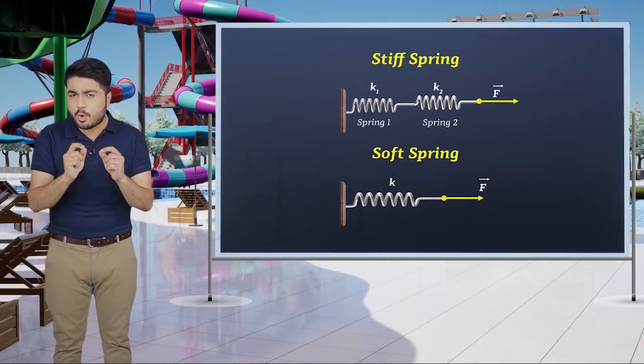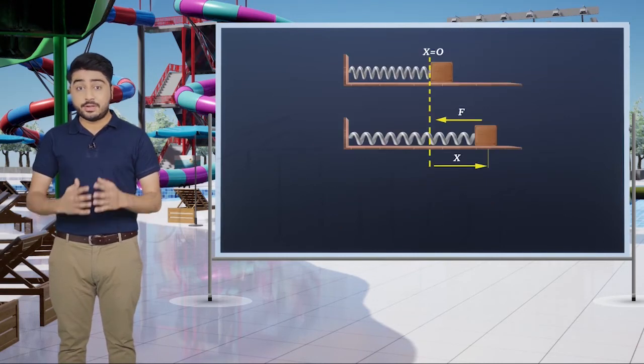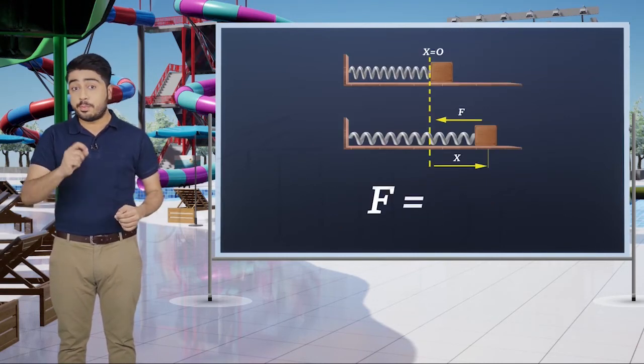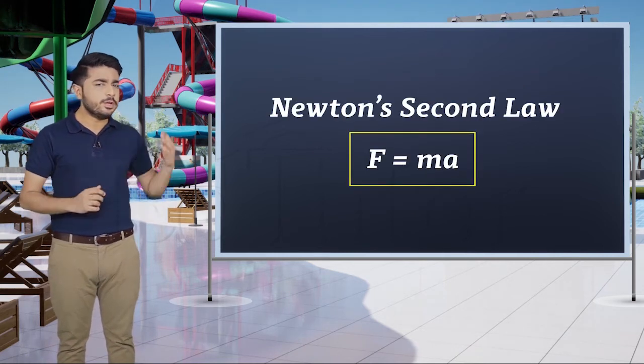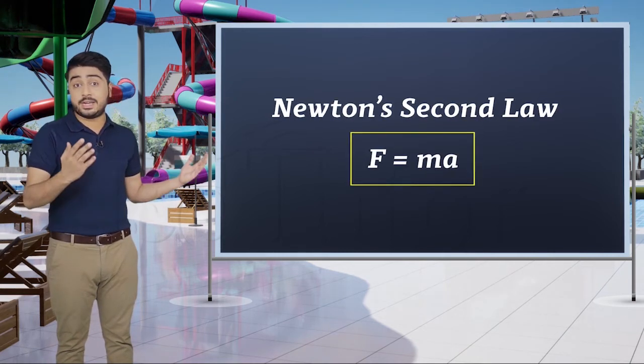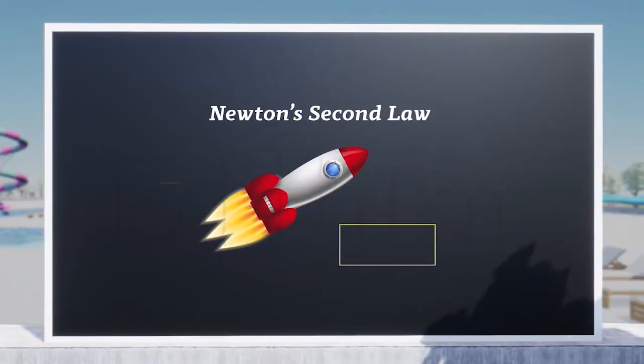While soft springs have a small value of k. Now moving back to Hooke's law, F = -kx. Does anyone remember Newton's second law? We studied another definition of force in that law. Yes, F = ma.